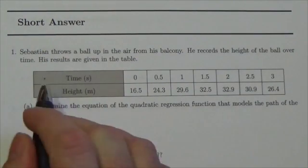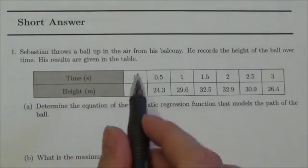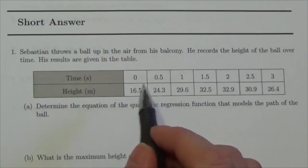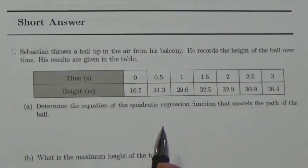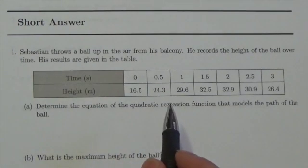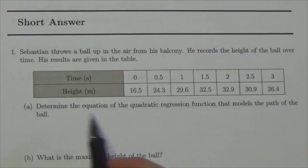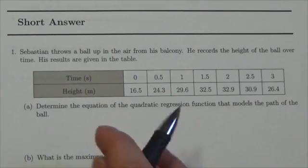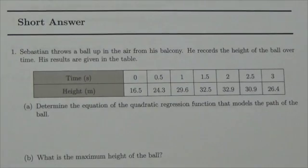The question says Sebastian throws a ball up in the air from his balcony. He records the height of the ball over time. His results are given in the table here. So now what we've got to do here is determine the equation of the quadratic regression that models the path of the ball, and then we're going to do a couple things with that.